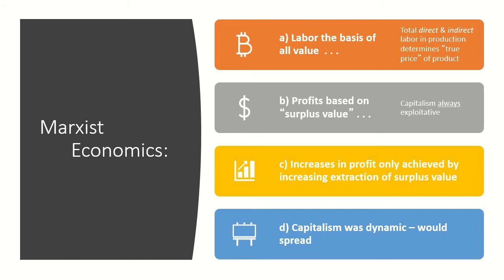In Marxist economics, labor is the basis of all value. Total direct and indirect labor in production determines the true price of a product — the natural price. Profits are based on surplus value, and capitalism is always exploitative. If it costs a dollar to make a widget and you sell it for five dollars, that capitalist model is in itself exploitative. Increases in profit are only achieved by increasing the extraction of surplus value, and capitalism, being dynamic, would spread. This is the classic Marxist economic ideology.